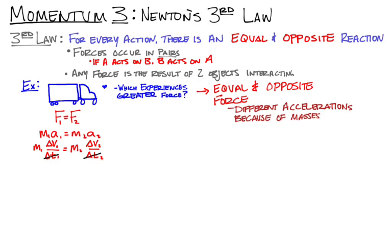Now, we know for a collision that the time is the same for each object. The fly is not touching the truck any more than the truck is touching the fly. So, if we cross time out, what we see is that we have change in momentum for object one is equal to change in momentum for object two.